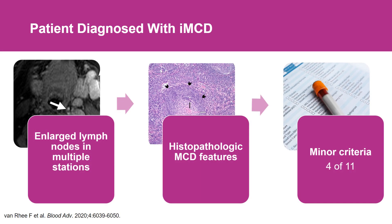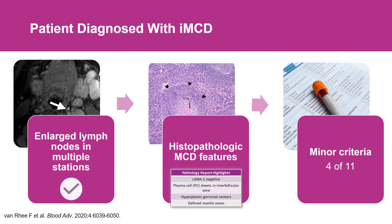Bringing this case together: you've got a patient with multiple regions of enlarged lymph nodes, pathology consistent with multicentric Castleman disease, HHV8 testing that's negative — indicating this is HHV8-negative idiopathic multicentric Castleman disease — and 4 out of 11 minor criteria. We would then go to our treatment guidelines, where the first-line recommended therapy for a patient like this would be anti-IL-6 therapy with siltuximab.